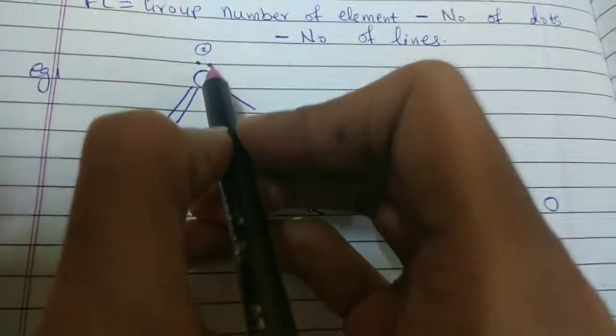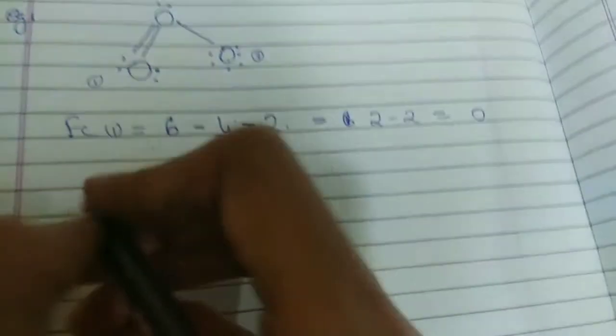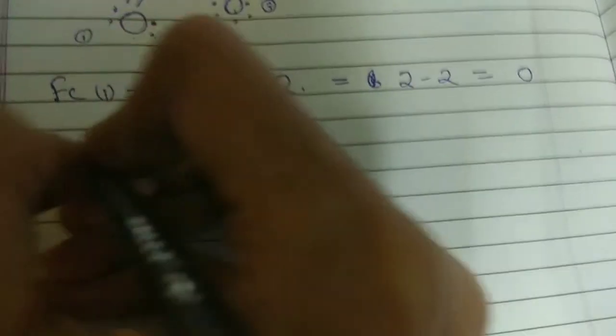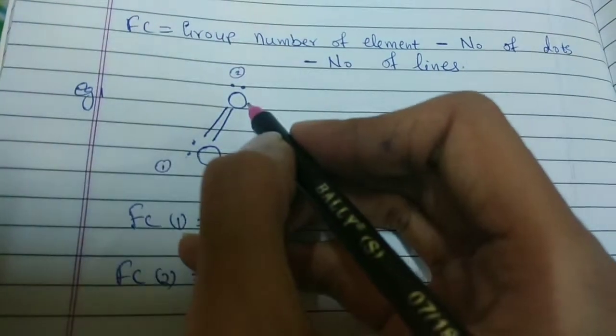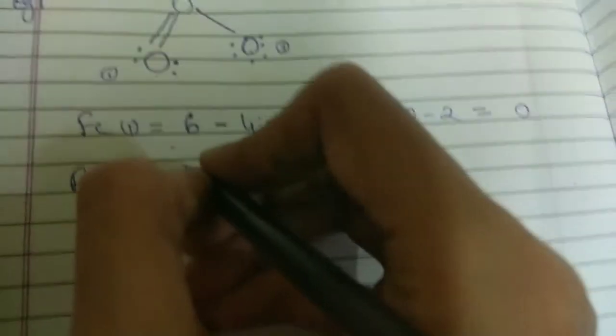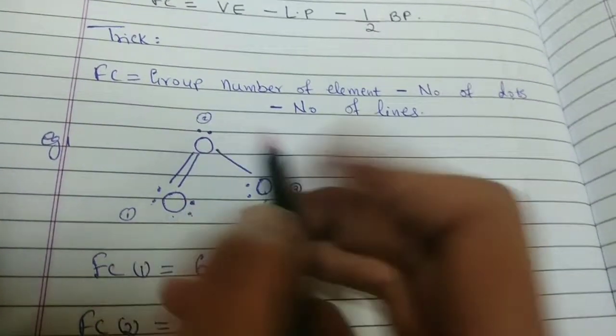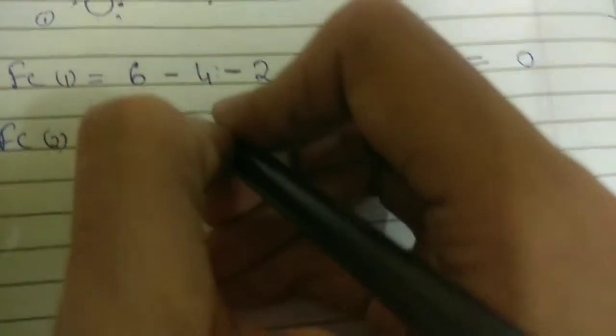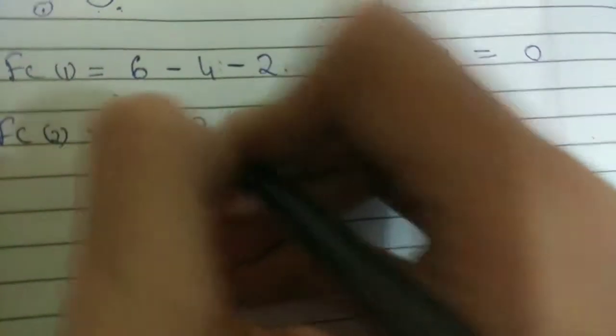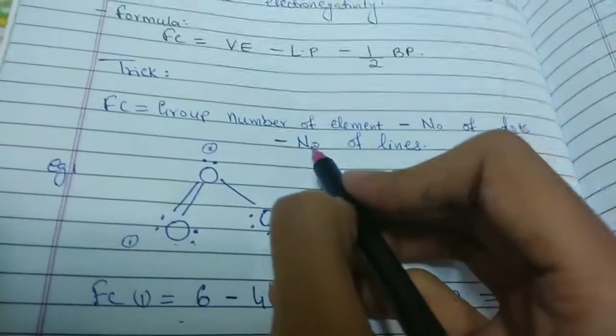Now, let us take this second oxygen atom. So, we write FC for 2. So, again the group number of the element won't change. So, we write 6 over there. Then, number of dots. So, this oxygen or the oxygen 2 has only 2 electrons. So, we write 2 over there. Then, number of lines.